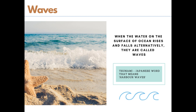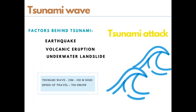A huge tidal wave is called a tsunami — it's a Japanese word which denotes a harbor wave. Whenever there is a tsunami attack, harbor areas are destroyed, hence the name. Tsunamis are caused by earthquakes, volcanic eruptions, and underwater landslides, and these can shift enormous amounts of ocean water.